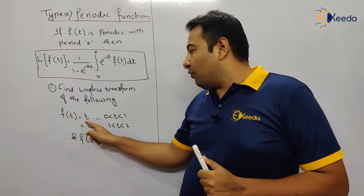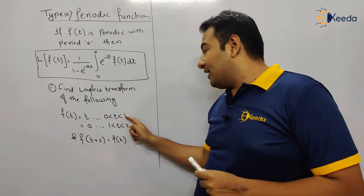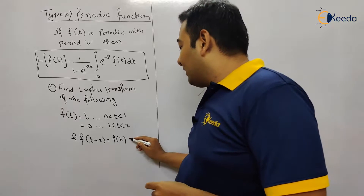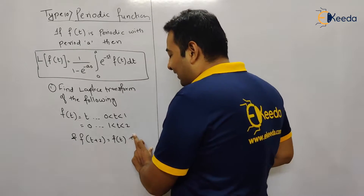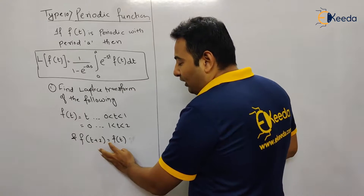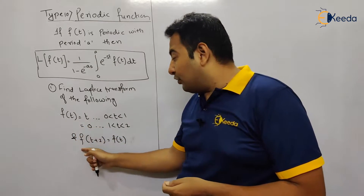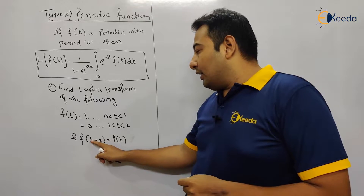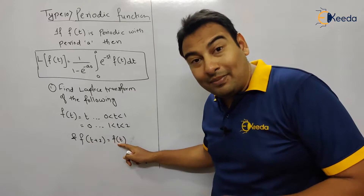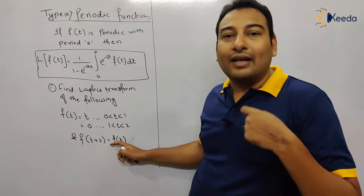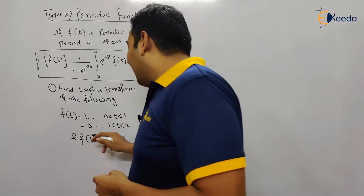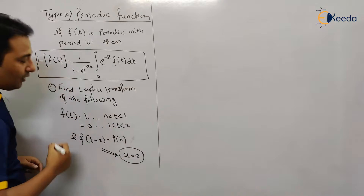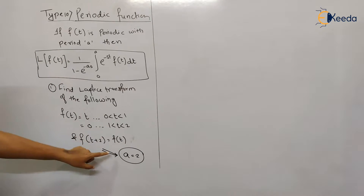The first problem: f(t) = t for 0 < t < 1, and f(t) = 0 for 1 < t < 2. The notation f(t + 2) = f(t) indicates it is a periodic function — this function repeats itself after every two intervals. Therefore, the period of this function is a = 2. This line indicates that the function is periodic.